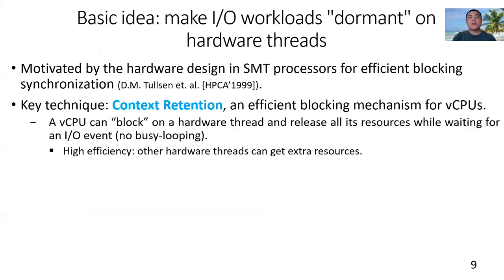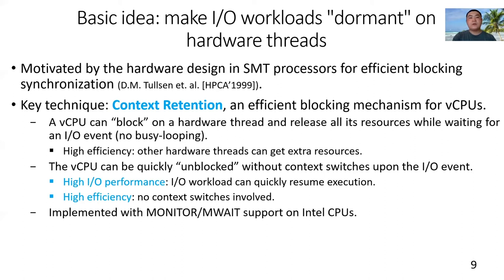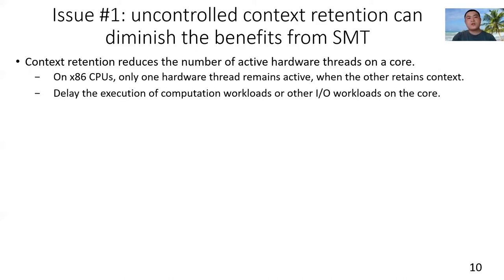With context retention, when a VCPU is waiting for an IO event, it can block itself on a hardware thread and release all its resources for other hardware threads. Thus, no busy looping is involved. Upon the IO event, the VCPU can resume execution quickly without context switches involved. Context retention is implemented with monitor and wait support on Intel processors.